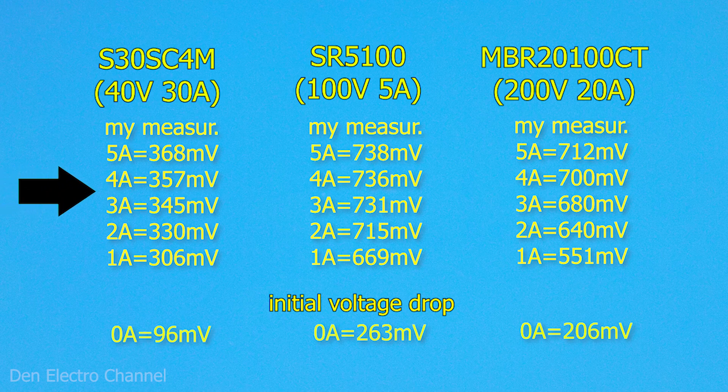These are the diodes that I checked now. This is a single diode for 100 volts, 5 amps. And these are, again, dual diodes for 200 volts, 20 amps. One diode naturally holds only 10 amps.